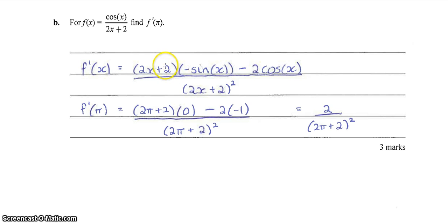Alright, part b, using the quotient rule. f dash of x, here's v du dx minus u times dv dx over v squared. Sub in pi and simplify, we get 2 on 2 pi plus 2 all squared. I wouldn't try expanding that. It's not going to make your answer any simpler, so we'll just leave it there and that should get us the three marks.